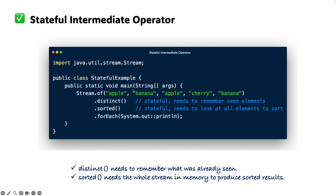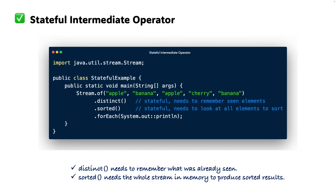Now looking at the stateful intermediate operator example: we have a list of strings and we want to find the unique elements, so we use the distinct method. To find unique elements, it needs to remember what was already seen — once it knows all elements in the stream and stores them, it can figure out which ones are duplicates to filter out. Similarly, to sort a group of objects you need to remember the whole stream in memory to produce the sorted result. So distinct and sorted come under stateful intermediate operators.